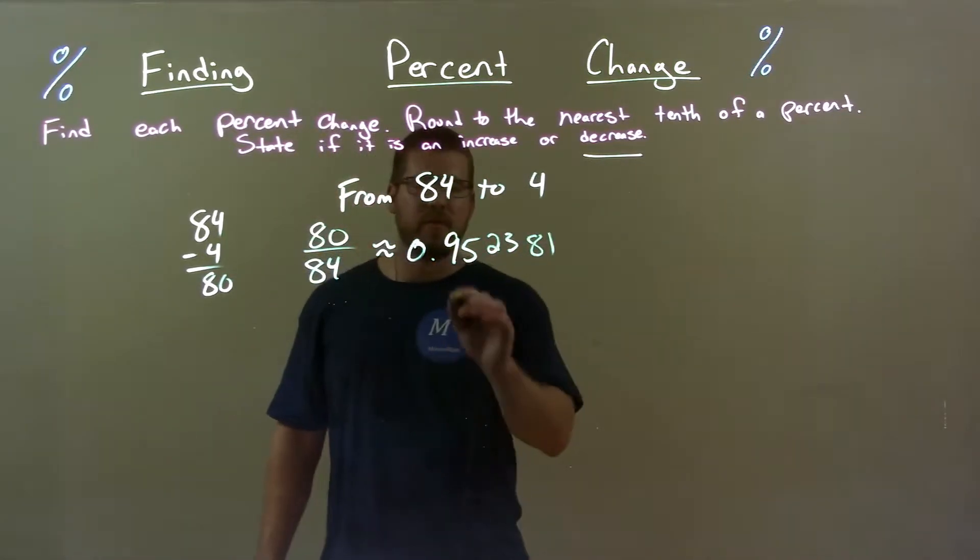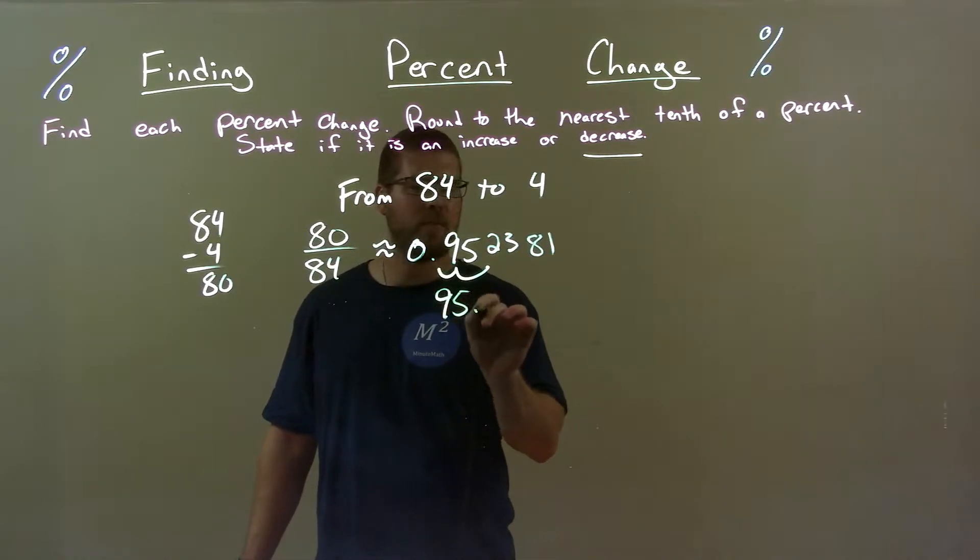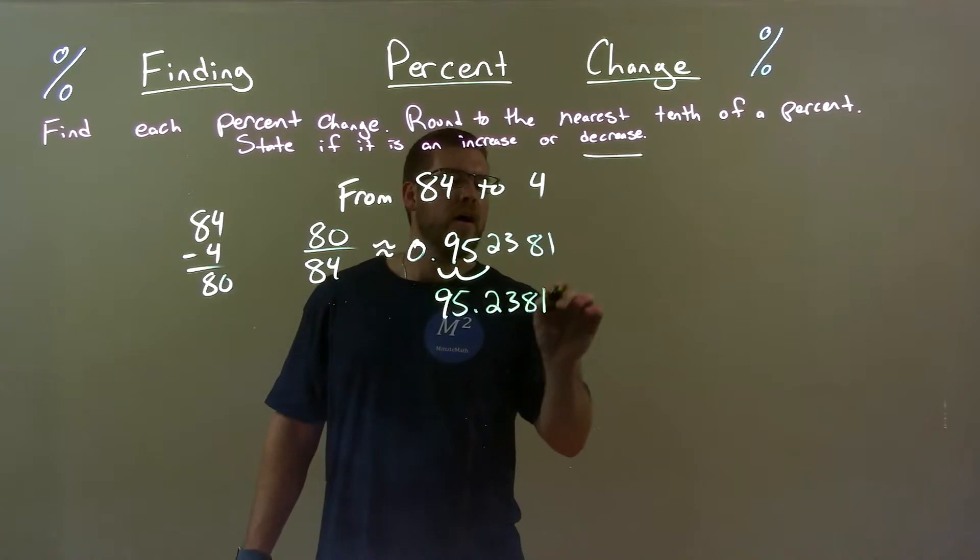Now write that as a percent. Decimal point, two spots to the right, 95.2381%.